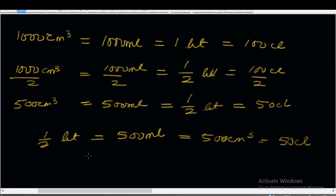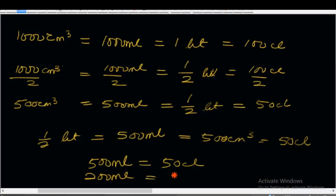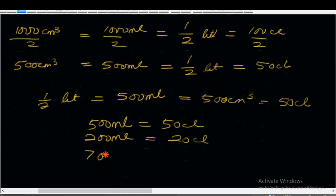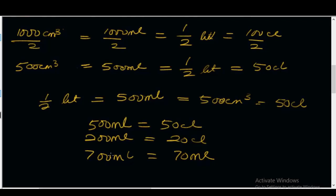We can also say that 500 ml is equal to 50 centiliters. It is also right to say 200 ml is equal to 20 centiliters, and 700 ml is equal to 70 centiliters. You can get measuring devices like beakers, conical flasks, and measuring cylinders to be able to get this measurement right.